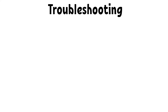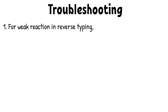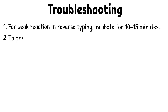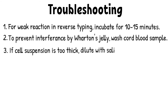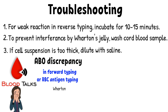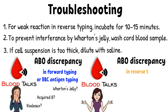Troubleshooting for ABO typing. First, if you see weak reactions in reverse typing, try incubating your test tube for about 15 minutes to enhance weak serum reactions, then repeat steps 9 and 10. Second, cord blood samples need to be washed before performing ABO grouping — Wharton's jelly could interfere with agglutination, and insufficient washing can give false negative results. Wharton's jelly is a gelatinous substance within the umbilical cord. Third, if the cell suspension is too thick, it will give false negative results. If this quick troubleshooting doesn't resolve the issue, check out the video on how to troubleshoot ABO discrepancy.